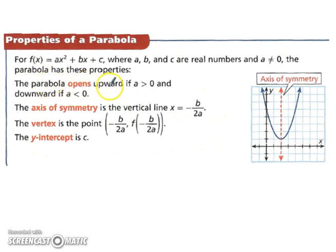So these are going to be the properties. The parabola is going to open up if a is bigger than 0. So if it's a positive a, it's going to open up. If it's a negative a, it's going to open down. You can think of it like a smiley face. So if it's positive, it's happy. And if it's negative, it's unhappy.